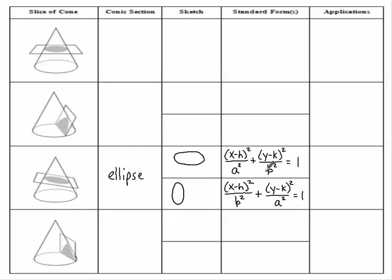It looks like a circle in terms of its two quantities being squared with a plus sign in the middle. What's different between the circle and the ellipse is the denominators of our two quadratic terms are different numbers — a squared and b squared are not the same. If they are the same, we'd have a circle; when they're not the same, we have a stretched circle.